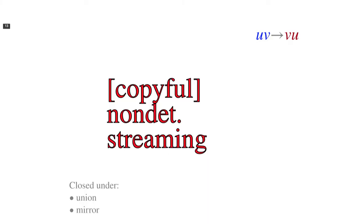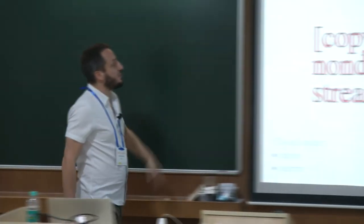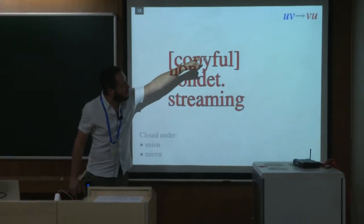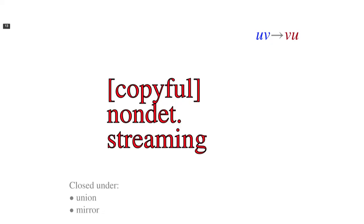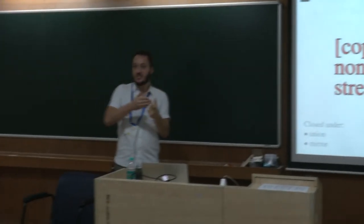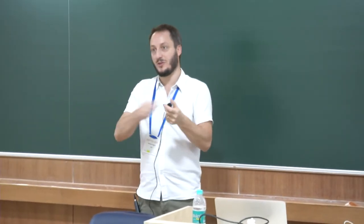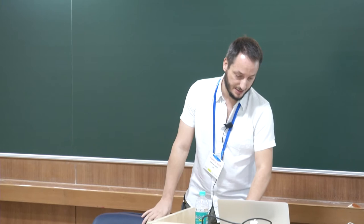With the non-deterministic variant, even in the copyless restriction you can compute relations not doable by two-way transducers. For instance, you can guess an arbitrary splitting point UV in the input and output VU — swapping the two factors. This cannot be done by a two-way transducer because you would need to guess the splitting point twice at the same position.